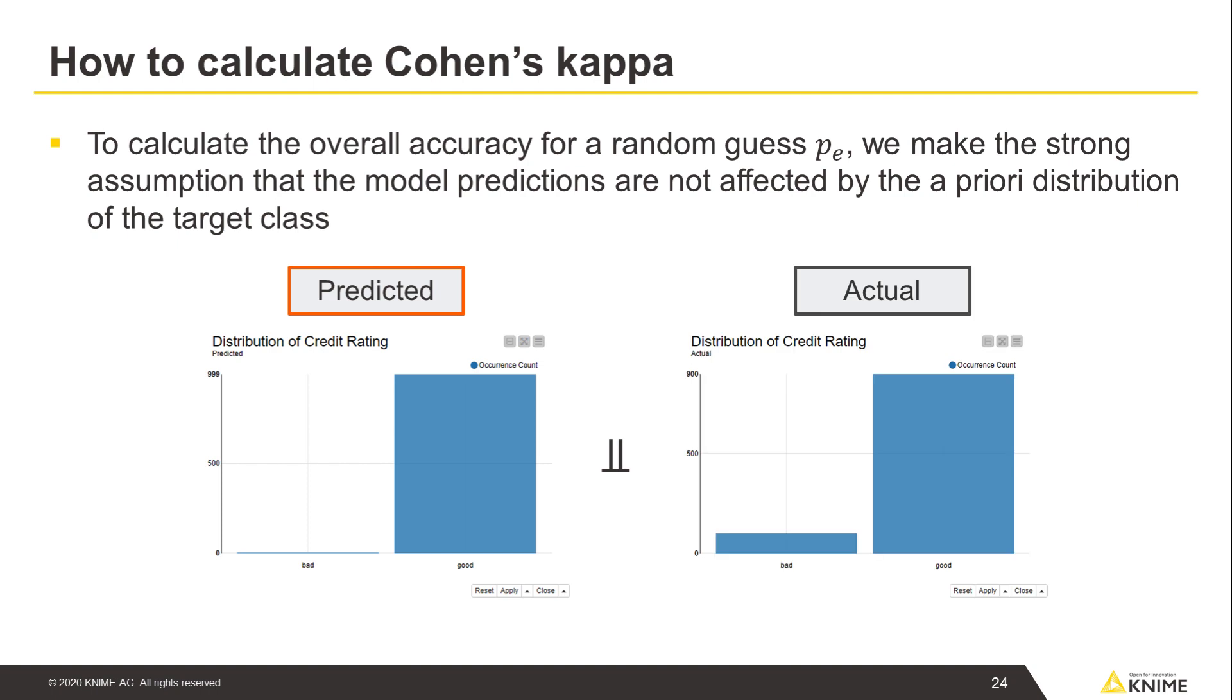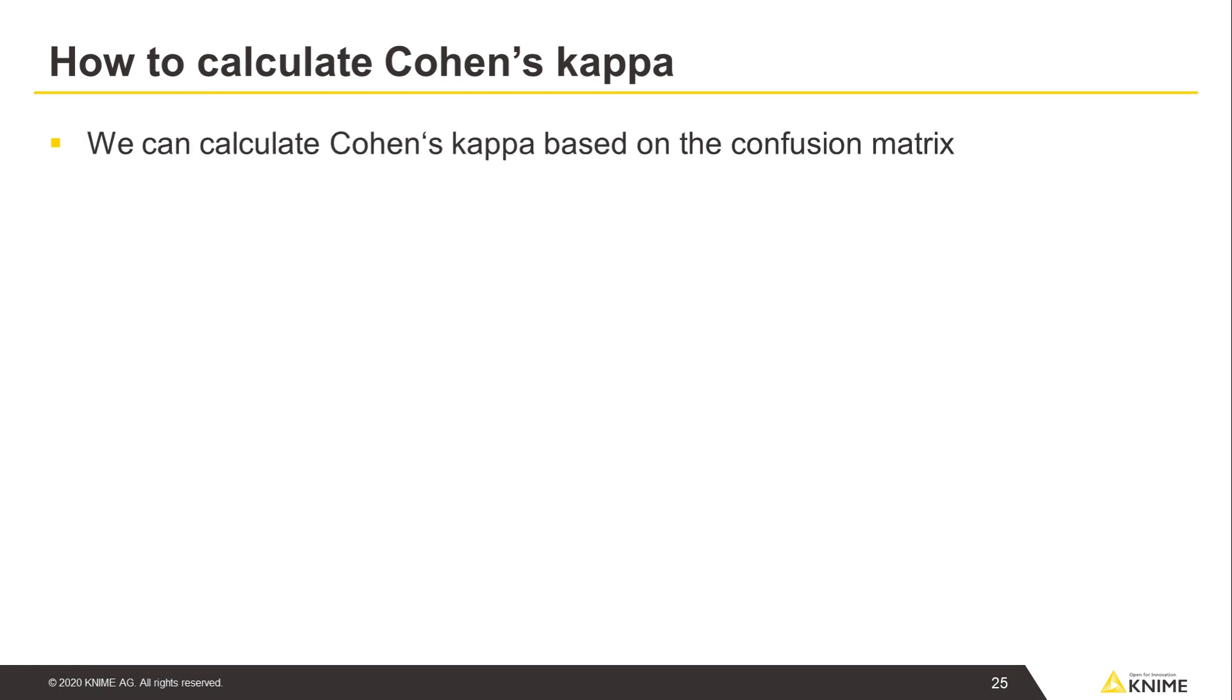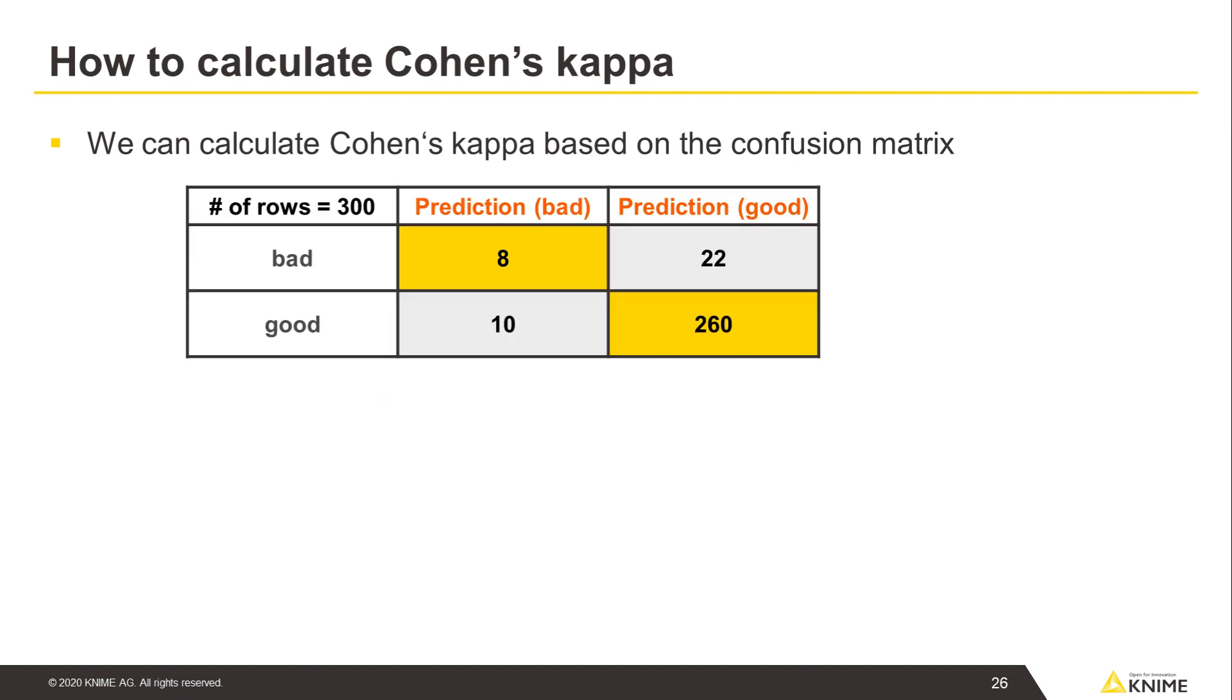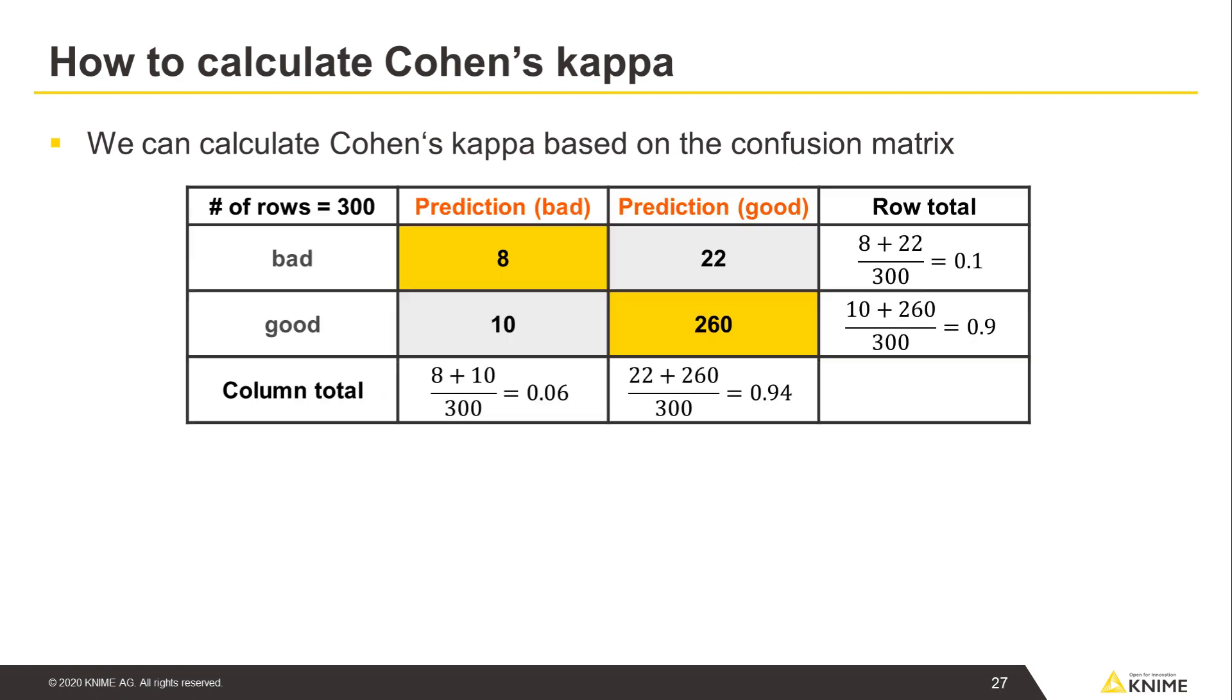Notice, though, that this assumption is often violated when working with unbalanced data, since the classification model tends to predict the majority class in case of uncertainty. We can calculate Cohen's kappa based on the confusion matrix. We have pre-calculated the row and column totals of the confusion matrix.